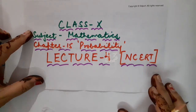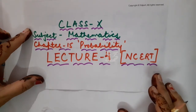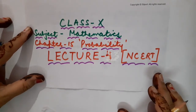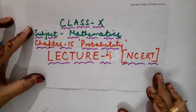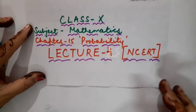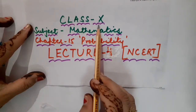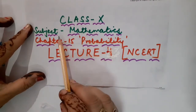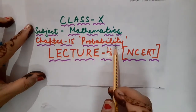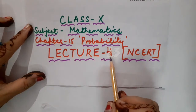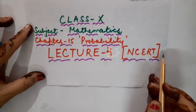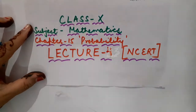Good morning children, how are you all? I hope you all are taking good care of yourself. So children, let us start today's mathematics class of grade 10th. This is class 10th, subject mathematics, chapter number 15, Probability, lecture number 4. And children, the content I am going to cover is from your textbook, that is NCERT.